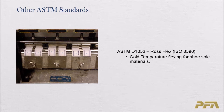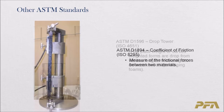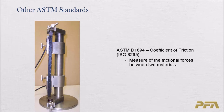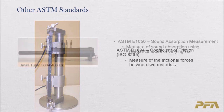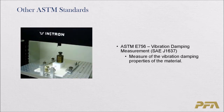ASTM D1052 is Ross Flex — cold temperature flexing for shoe sole materials. ASTM D1596 is the drop test, where flat plate weights or curved weighted forms are dropped from various heights and deceleration is measured for packaging foam, as well as headrest and headliner composites. ASTM D1894 is the coefficient of friction, measuring frictional forces between two materials. ASTM E1050 measures sound absorption for carpet underlay using impedance tubes of varying hertz. ASTM E756 measures vibration damping properties of materials.